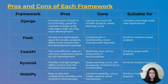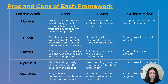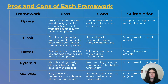Pyramid is flexible, lightweight, and offers control over the development process — similar to Flask. However, it has a steep learning curve, is not as popular, and has limited built-in functionality. Web2Py is easy to understand and use with tons of built-in functionality like Django, but has limited scalability and is not as widely used, meaning a very small community and few online resources. In terms of application size: Django suits complex large-scale apps, Flask and Pyramid suit small to medium, FastAPI suits both small and large, and Web2Py suits small to medium.